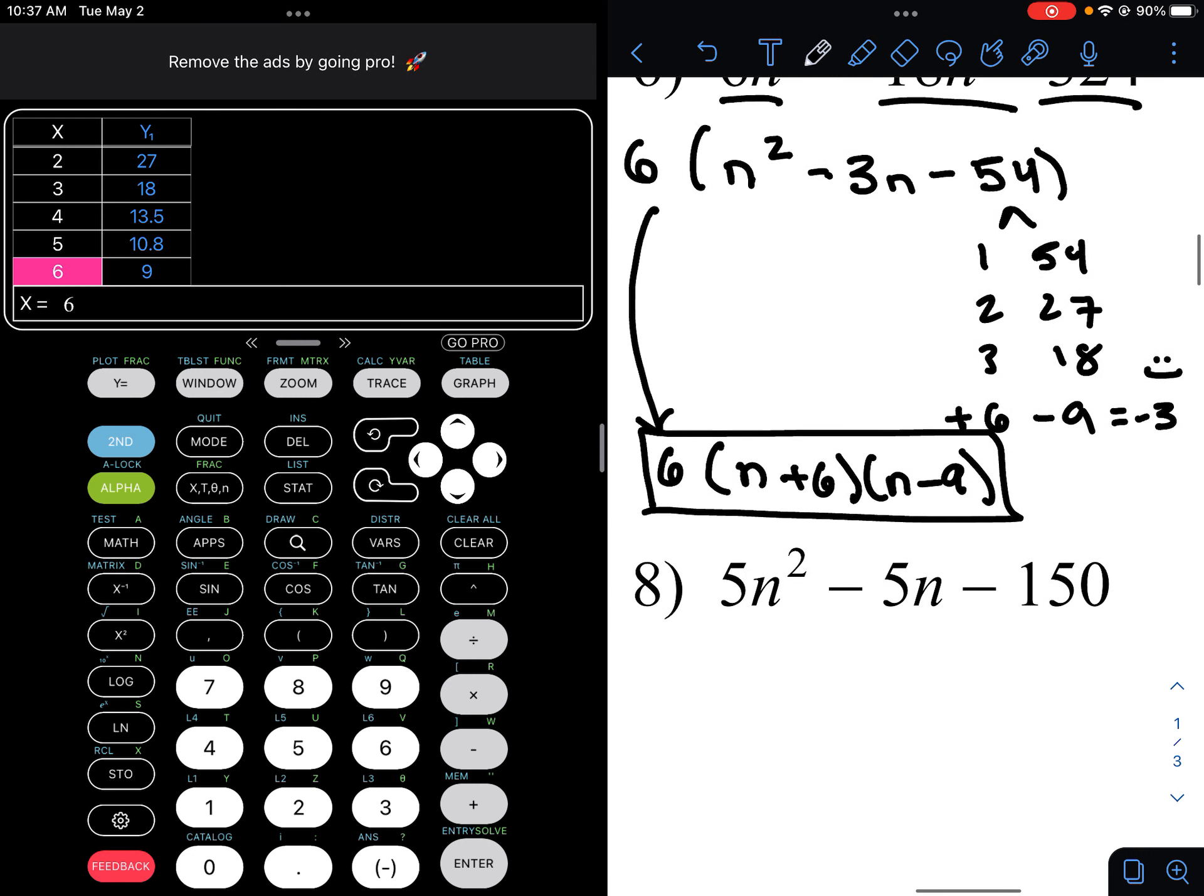Keep in mind, you could actually also have n minus 9 and n plus 6. They're the same thing. Then it is important which one has the positive and which one has the negative. So a little calculator trick for you there.